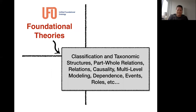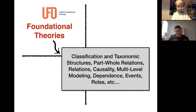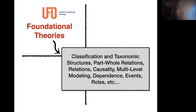For the past 20 years, we've been developing theories by taking things from philosophy and adapting them to address the specific goals of conceptual modeling or data modeling in computer science. This materializes as a particular foundational ontology called UFO — the Unified Foundation Ontology — which is a system of micro-theories dealing with all different aspects of conceptual modeling: classification, taxonomic structures, parthood relations, causality, multi-level modeling, dependence, events, roles, and so on.